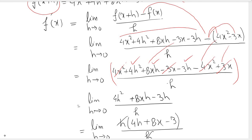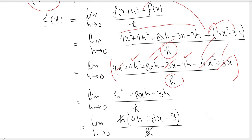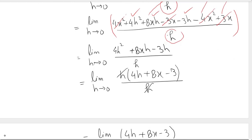Now we can see that what we have to do is remove the h from the denominator somehow. We have h in all the terms: h squared here, h here, and h here.